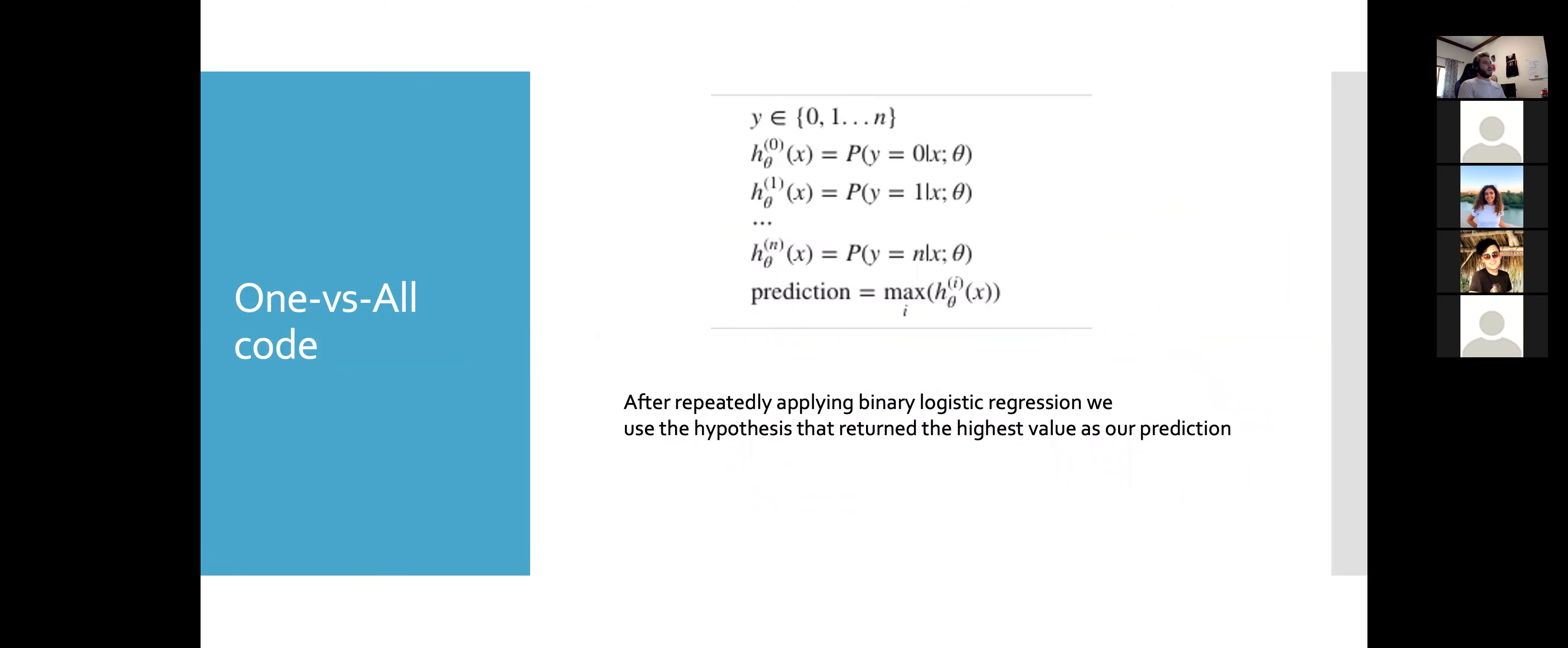The code for this would just be repeatedly going through zero through n amount of classes and taking your prediction, your classification would be the maximum value that's hypothesized.